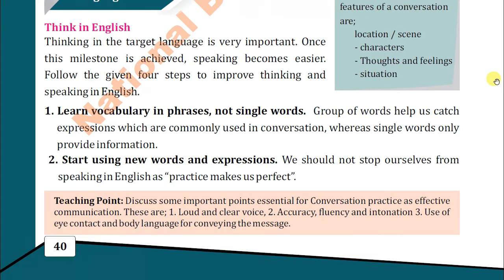Once a milestone is achieved, speaking becomes easier. We must first try to think in English rather than translating from Urdu. Follow the given four steps to improve thinking and speaking in English. Number one: learn vocabulary in phrases, not single words. This is very important — always learn things in phrases, meaning in groups of words, not individual words. It is not possible to learn so many single words.